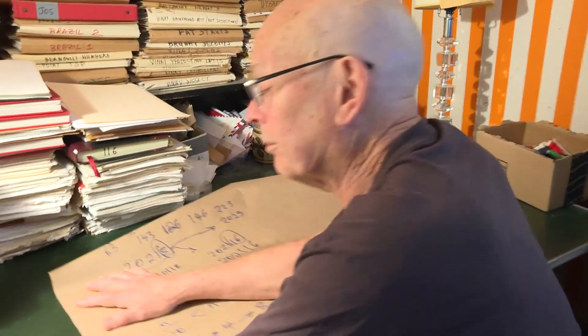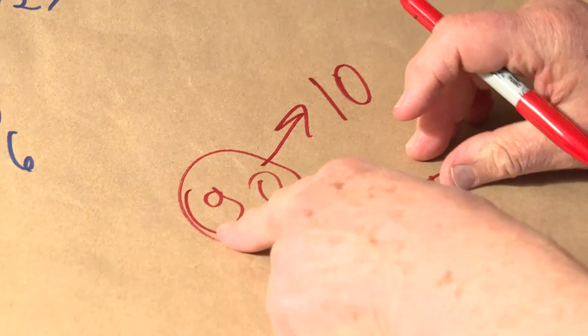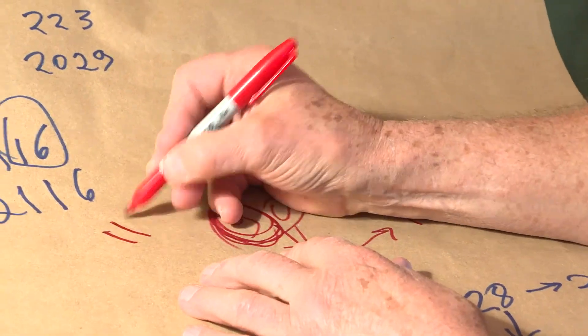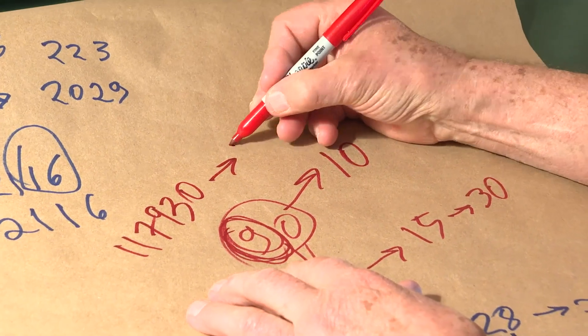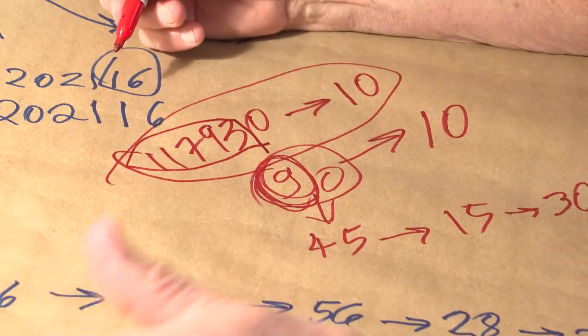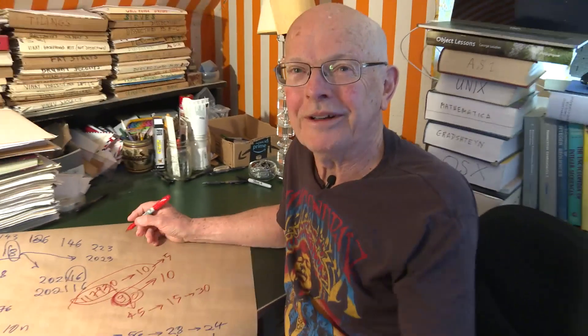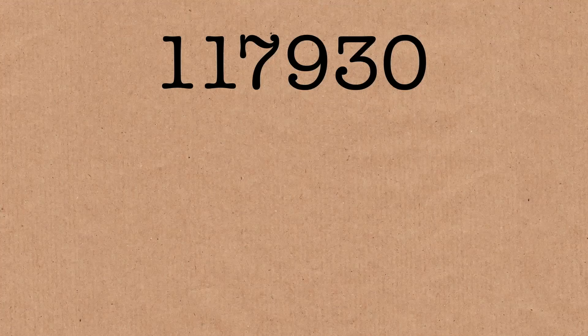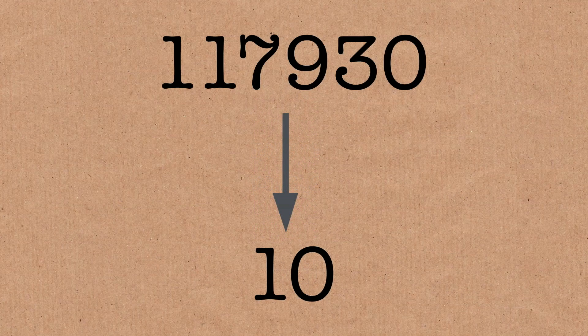So every number not ending in a 0 or 5 can get to 1. And conversely, because these operations are symmetric, we can go from 1 to any number not ending in 0 or 5. Now, what about numbers that do end in 0 or 5? They're all connected. We can get from 90 to 10 — this number 1,1,7,9,3,0 doesn't end in 0 or 5, therefore we can get to 1 from it. So we get to 10, and then to 5. The other class of numbers are all connected, but never the twain shall meet. There are two connected components.